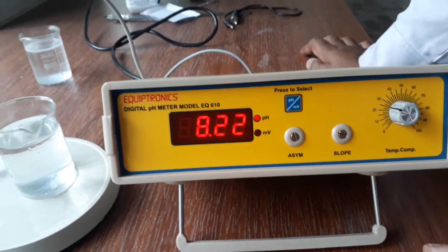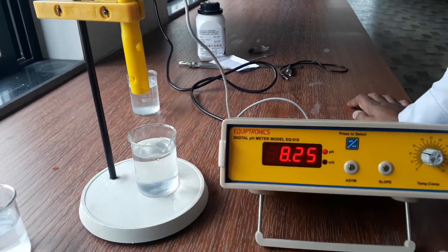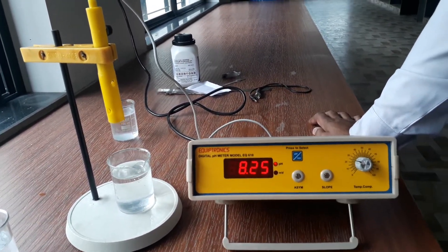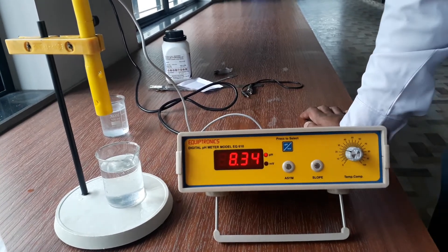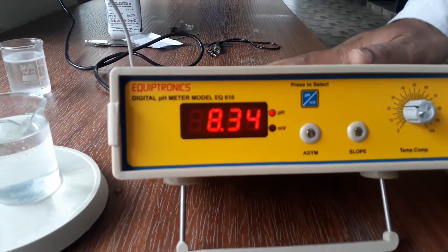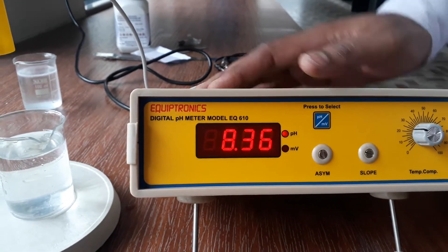It is better than pH paper and universal indicator because it is giving the exact reading in this digital meter. Now here are parts of pH meter and how to calibrate this. This is not in your syllabus so directly we will see how to use this pH meter for taking readings.